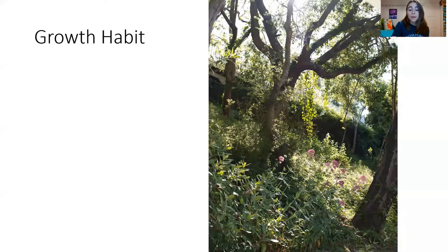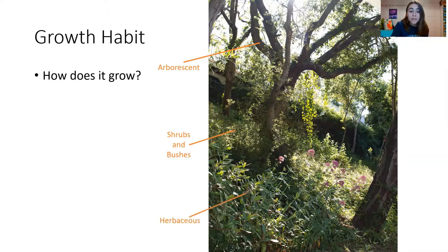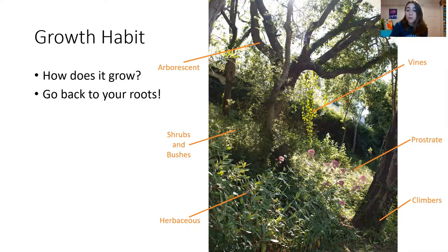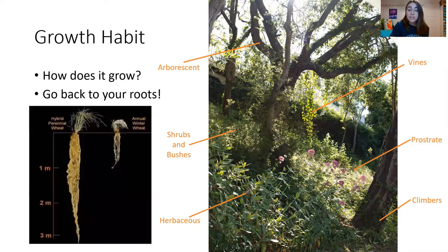So then growth habit becomes incredibly important. How is it growing? Is it growing up toward the sky? Is it bunched up like shrubs? Is it growing upward, hanging downward, crawling, climbing? You might not even see anything above ground — maybe you have to go back to your roots. Is it really an extensive root system, leading it to be a perennial? Maybe it's even a bulb? That means it's growing year after year. Whereas an annual dies after one year, and that's going to be a very shrimpy looking root system.